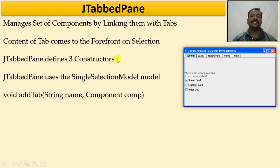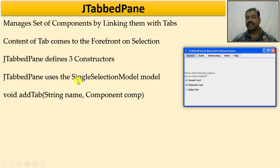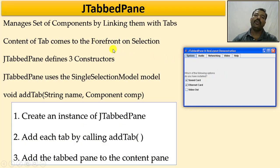The JTabbedPane defines three constructors and uses a single selection model — that is, when I click on a tab, only one tab can be selected at a time; I cannot select two tabs simultaneously. Whenever I want to add a tab, I use the function addTab, passing the tab name and the component I want to add.